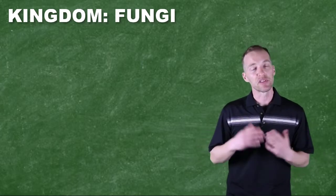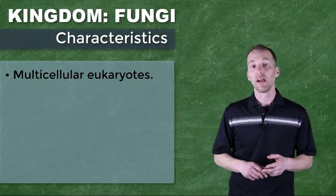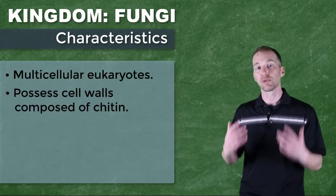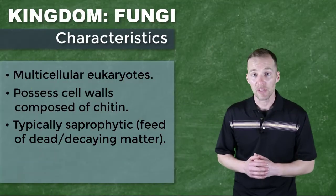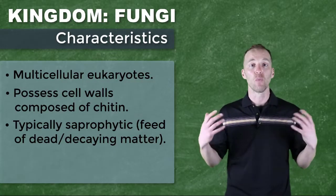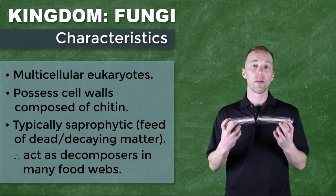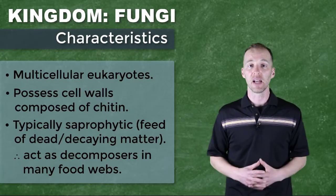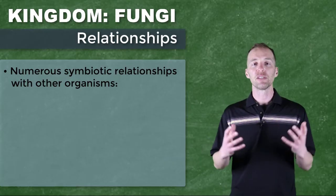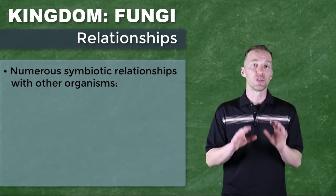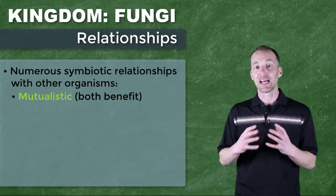All fungi share similar characteristics: they are eukaryotic, they are multicellular, and they are composed of cell walls that contain chitin — a structural carbohydrate we'll revisit when we discuss animals and the exoskeletons of insects. Most fungi are also saprophytic, meaning they break down dead or decaying animal or plant waste. They are extremely important as decomposers in their food webs, allowing for the cycling of nutrients from dead matter back into the organisms of the food web. Fungi also have some very interesting close symbiotic relationships with other organisms, and those relationships in which both organisms benefit are referred to as mutualism.